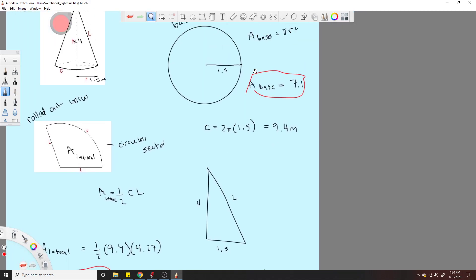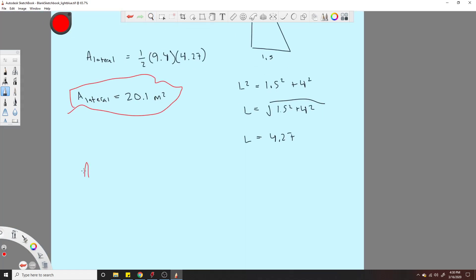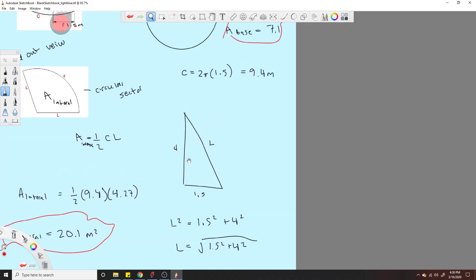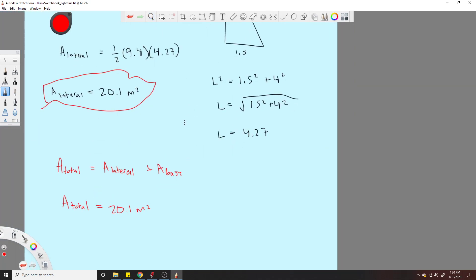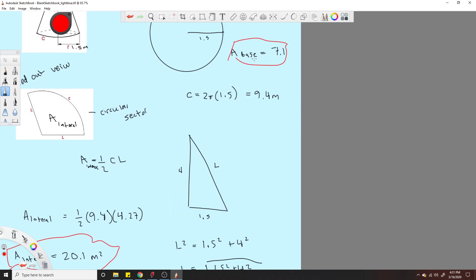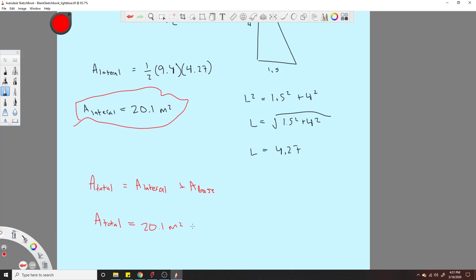And now we know A total. Is the lateral area plus the base area. A total is equal to 20.1 meters squared. Oh, sorry. I got the wrong. Plus 7.1 meters squared. I thought I did the problem wrong. Sorry.